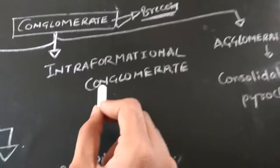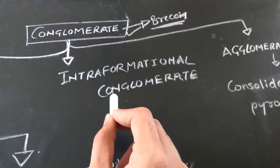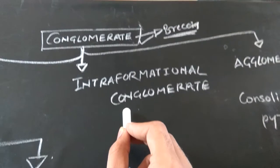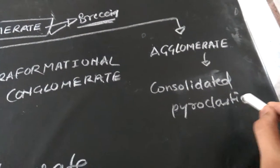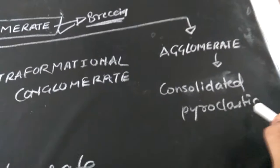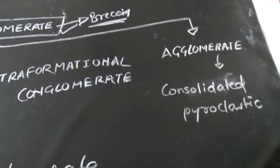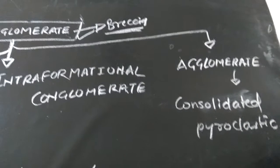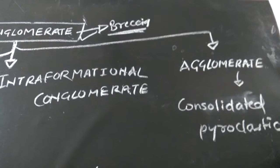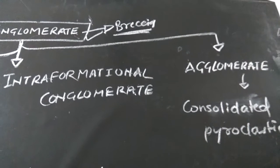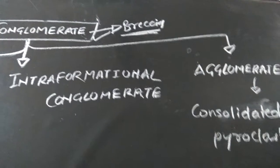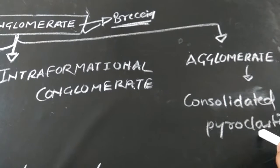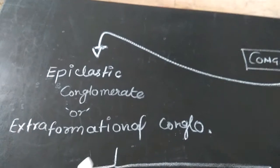In intraformational conglomerate, the clasts are derived from the same basin rather than multiple basins. In agglomerate conglomerate, the clasts are consolidated pyroclastics ejected from a volcano. All volcanic products that become consolidated while flying or falling near the volcano are considered under agglomerate conglomerate.